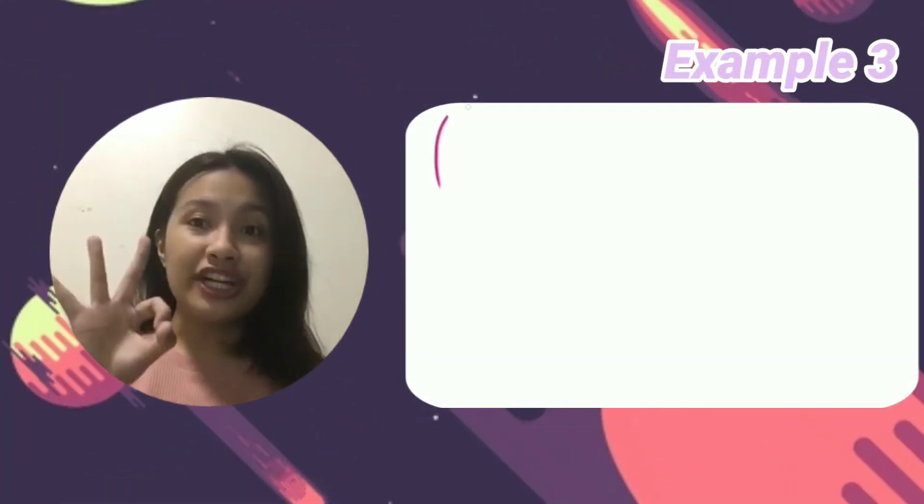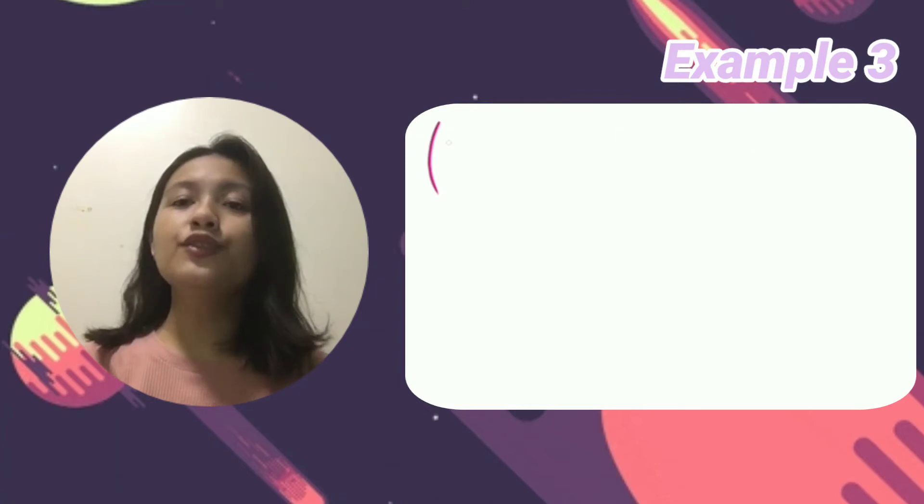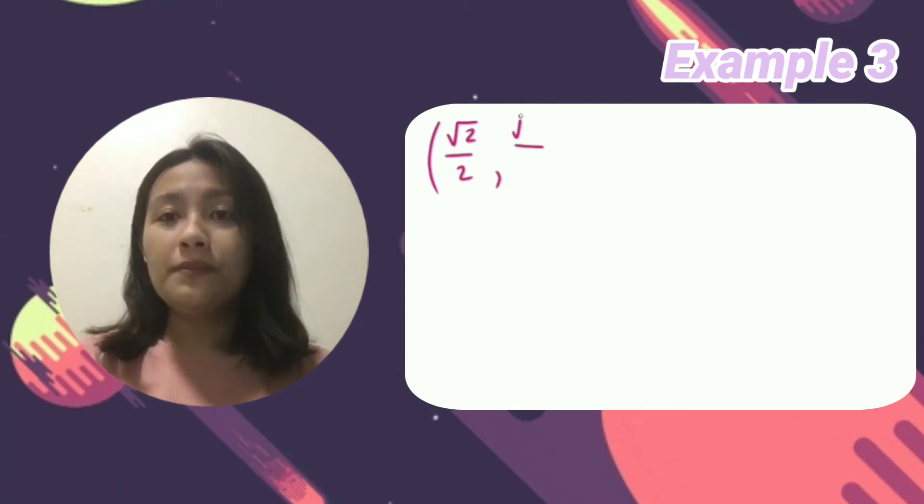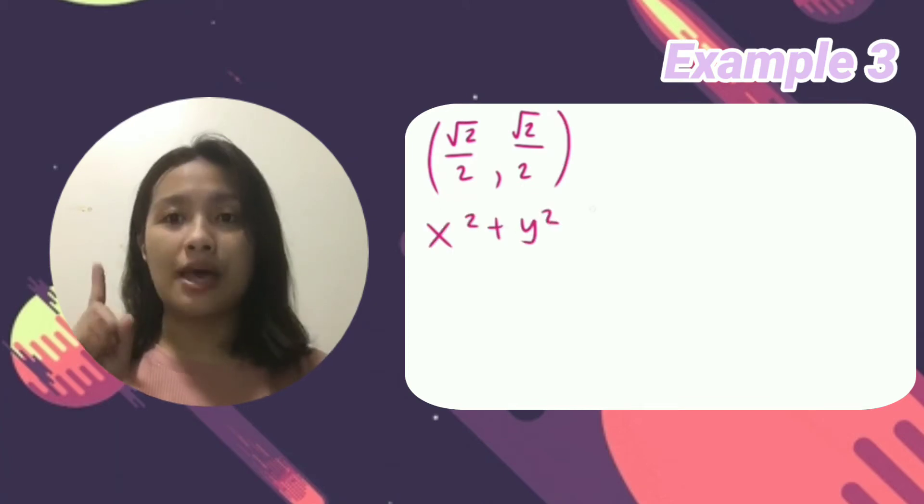So for example three, we have here (√2/2, √2/2). We must use the formula x² + y² = 1. Our next step is to substitute.